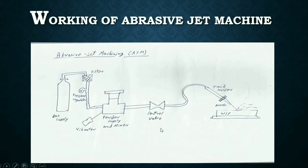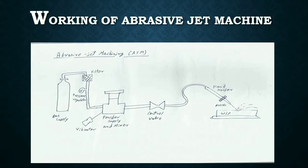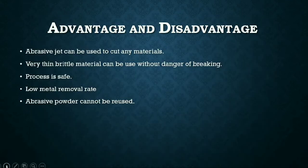This mixture passes through the control valve, where the control valve controls the discharge of the mixture — the powder-loaded gas. This powder-loaded gas then passes through the nozzle, where the nozzle provides kinetic energy to strike and provide force on the workpiece to remove the material. This is the simple working of abrasive jet machining.